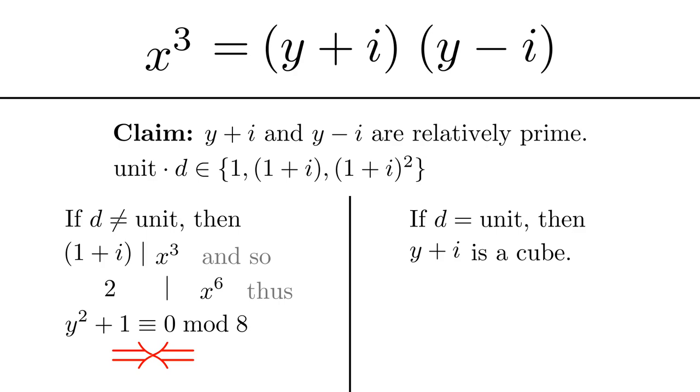So d is a unit and y+i is a cube. And what cube? Well, let me just pick an arbitrary Gaussian integer, m+ni. So y+i = (m+ni)³. I'll expand that out, and I'll factor and identify the real and the imaginary parts.